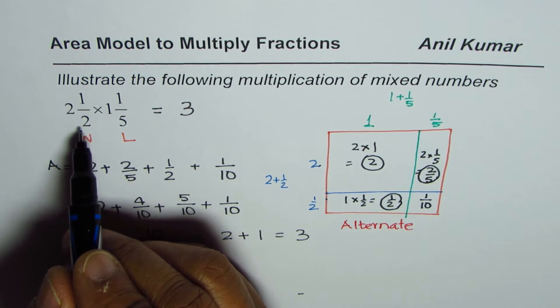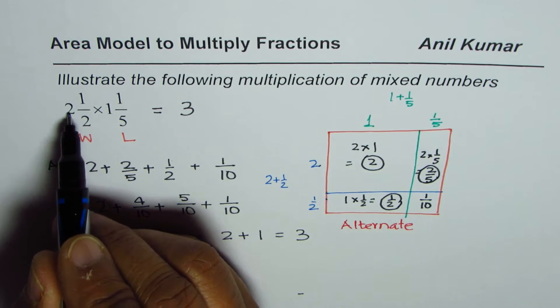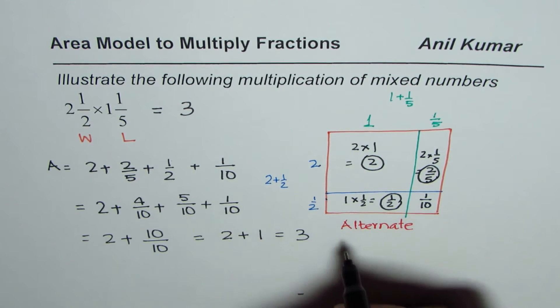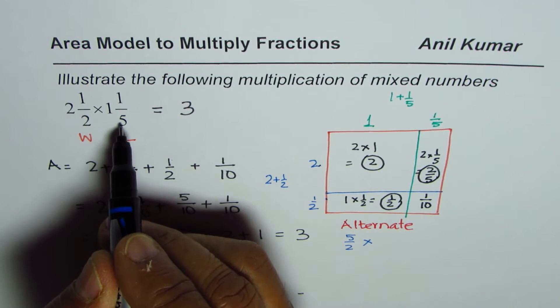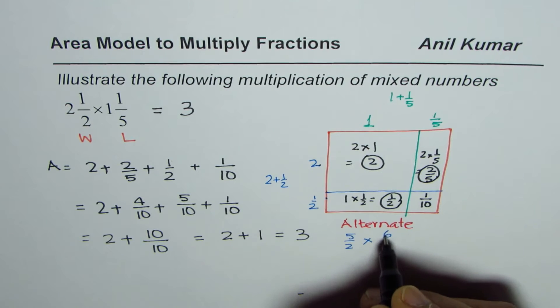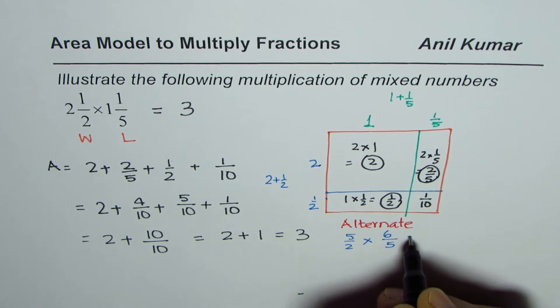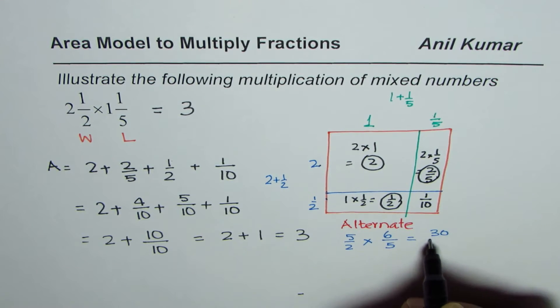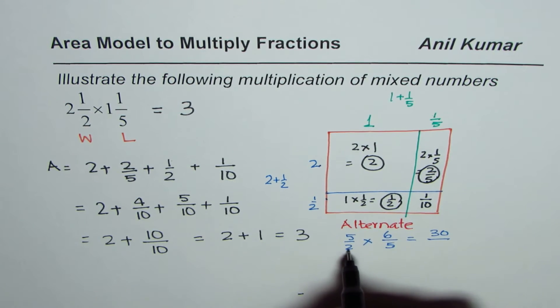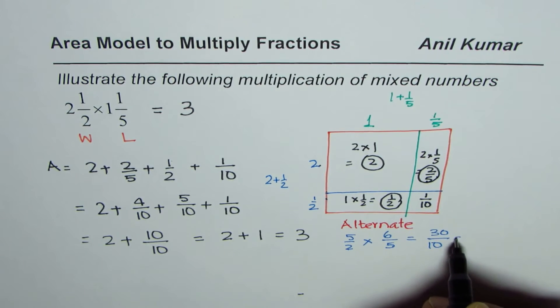The alternate method is to write these mixed numbers as improper fractions. 2½ is 2 times 2 = 4, 4 plus 1 = 5, so it's 5/2. 1⅕ is 1 times 5 = 5, 5 plus 1 = 6, so it's 6/5. Multiplying fractions: 6 times 5 is 30, and 2 times 5 is 10.